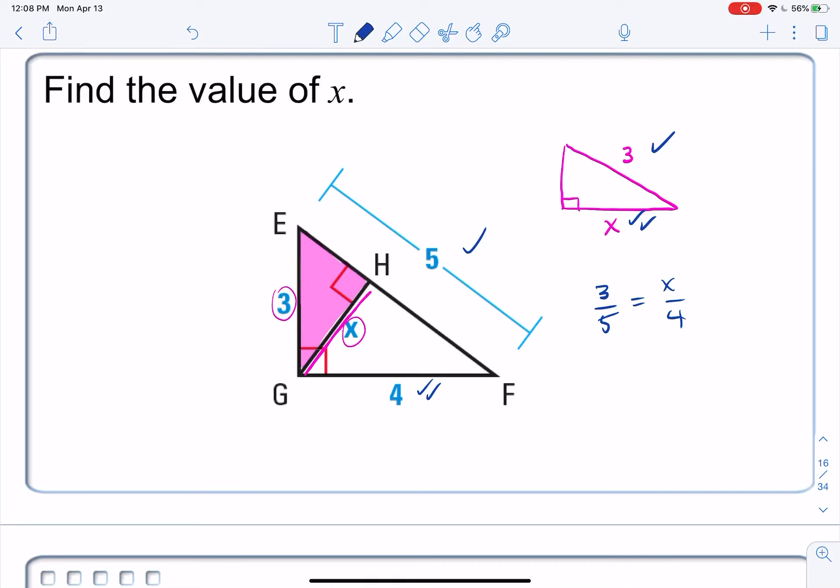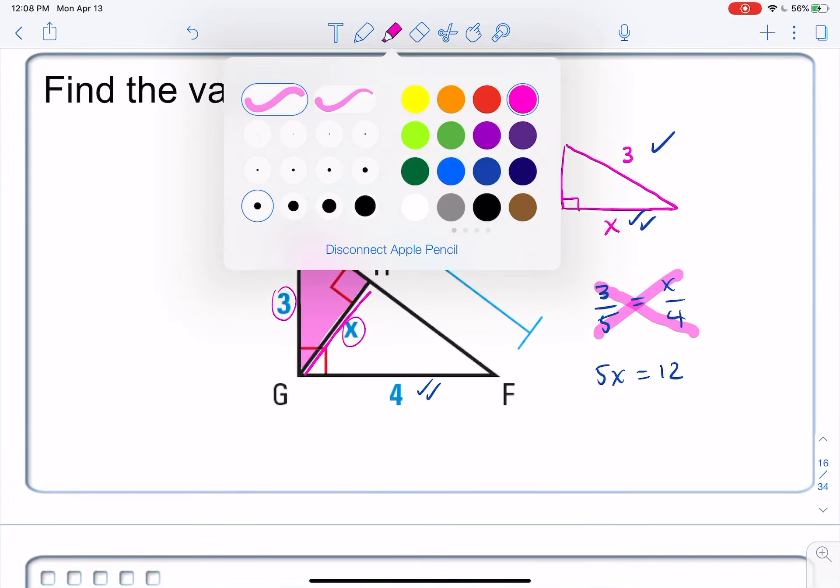Easy. And now cross-multiply this thing. I would have 5X along one of these diagonals is equal to 12 along the other diagonal. Cross-multiplying, set them equal to each other.